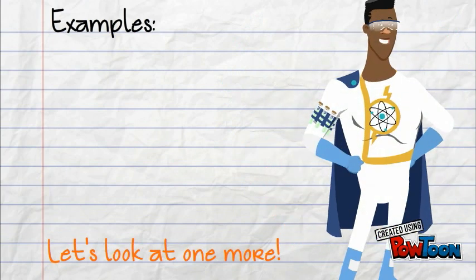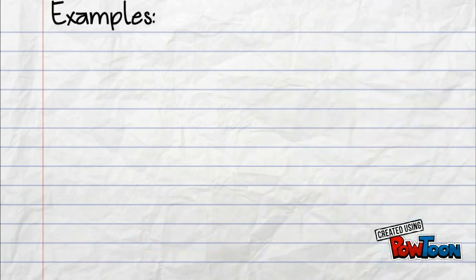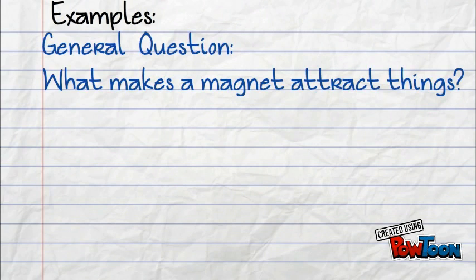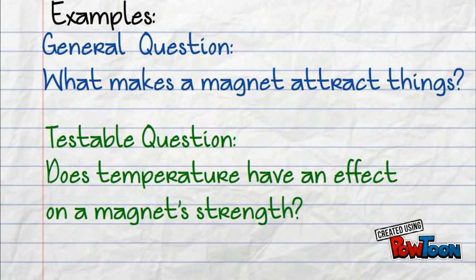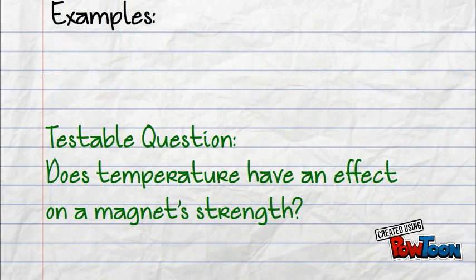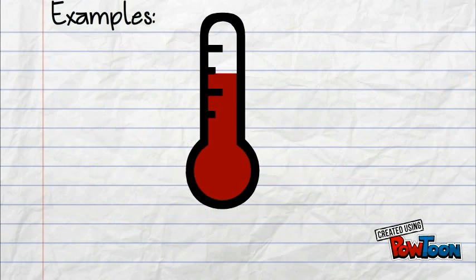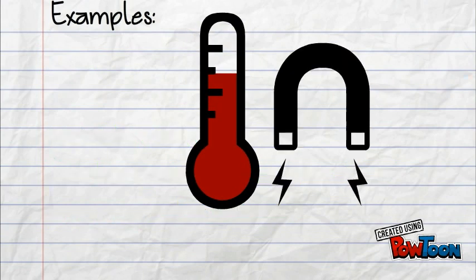Now let's look at one more. A general question will be, what makes a magnet attract things? We will write it as a testable question: does temperature have an effect on a magnet's strength? Our change in this statement is the temperature, and we are measuring the actual strength of the magnet.